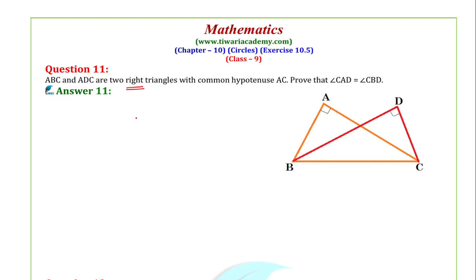So, diya hua hai ki ABC and ADC are two right angles with common hypotenuse. Is figure ko complete karte hai. Hame common hypotenuse maan lete hai diameter. Kyoki AC, common hypotenuse se ABC and ADC — so isko AC maan lete hai.